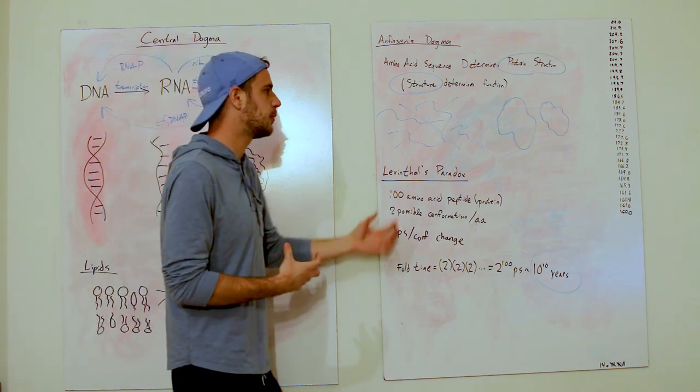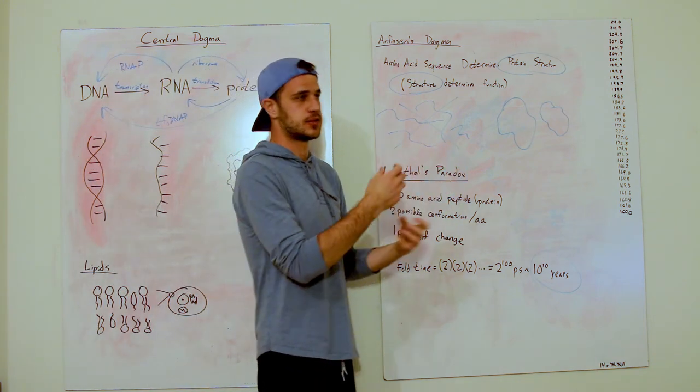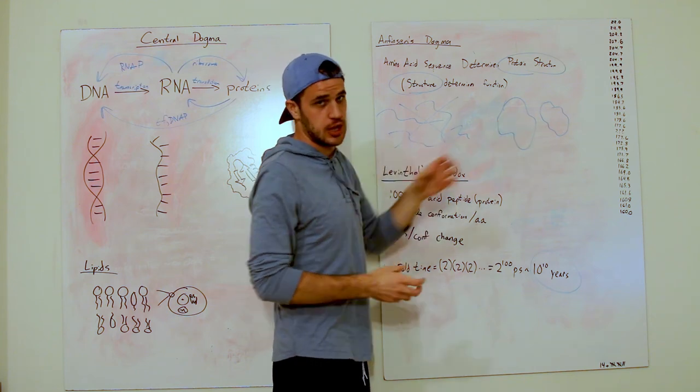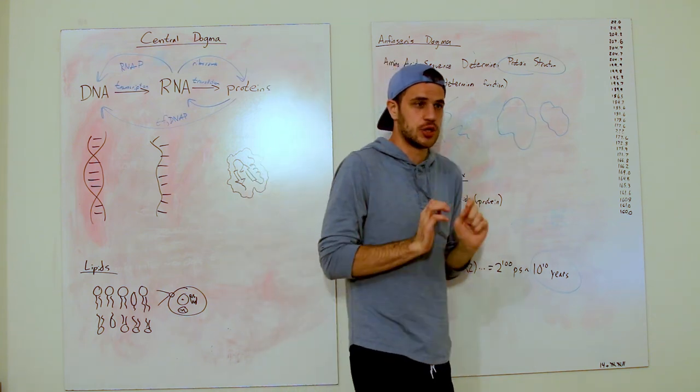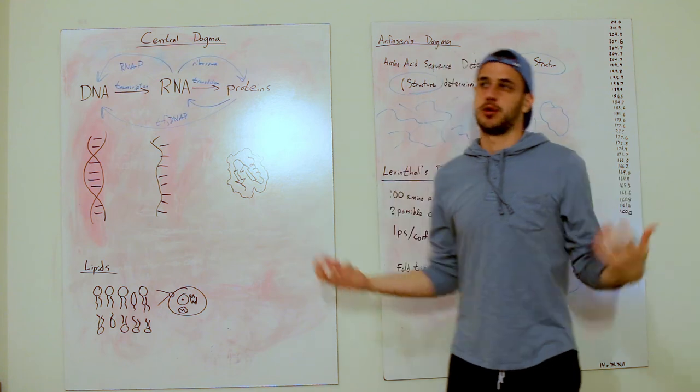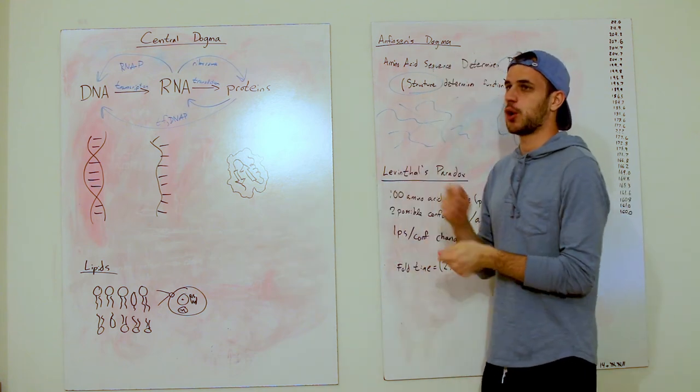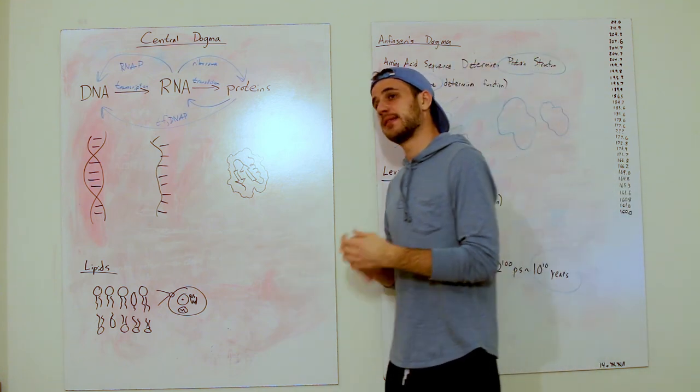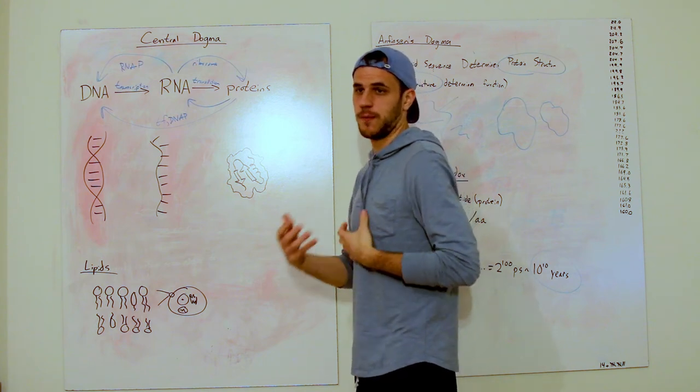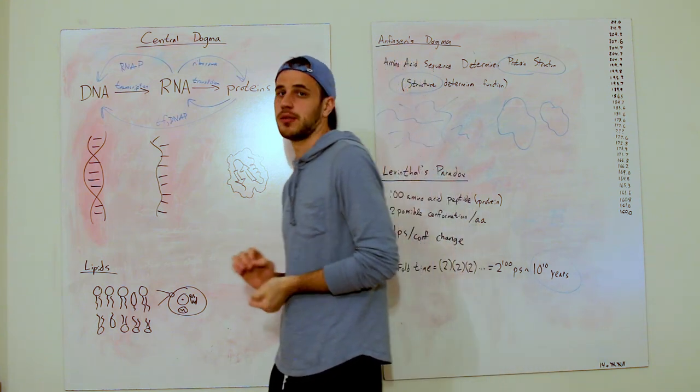So there's definitely not this random wiggliness that happens to get it to a compact structure. This wiggliness is not an intrinsic property of a protein. Instead, it has to go along some sort of a way and determine a structure by some other way rather than randomness.